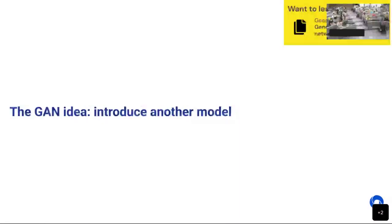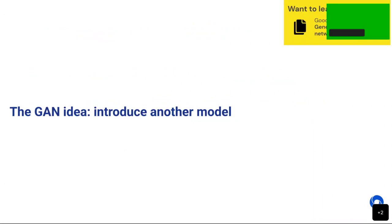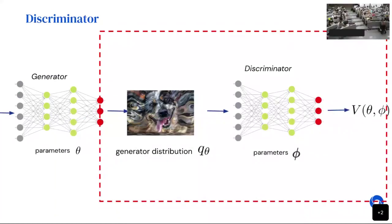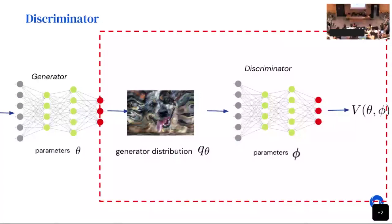We have a model we don't know how to train. The idea behind GANs is to introduce another model — a discriminator. The generator has parameters theta, the discriminator has parameters phi. We make this discriminator part of the loss function for the generator. This is new: unlike supervised learning where the loss is fixed, here the loss changes with this other model.